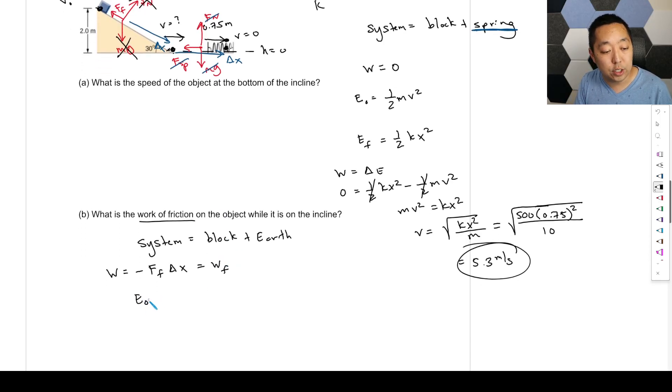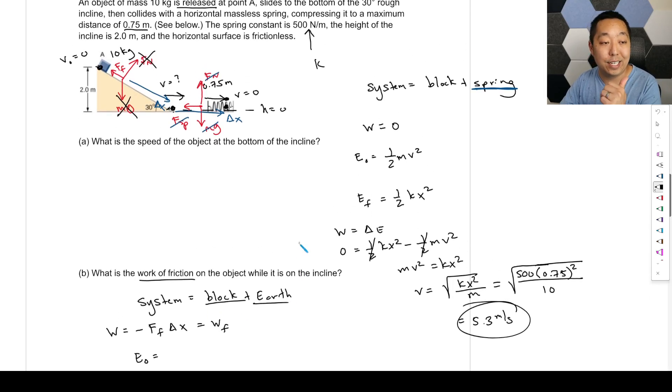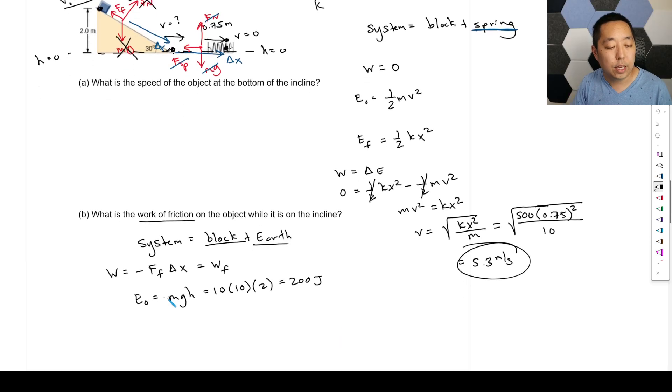Okay, what's the initial energy? So because we've included the block and the earth in our system, we're considering kinetic energy, but its velocity is zero. So there's no kinetic energy. We're now considering gravitational potential energy, and we'll make down here H equals zero so that it has gravitational potential energy, MGH, which is M times 10 times 10 times the height, which is 2, which is 200 joules.